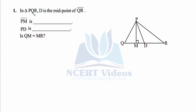Question one: in triangle PQR, D is the midpoint of line segment QR. Based on that, you have to answer the following questions: line segment PM is what, PD is what, and is QM equal to MR?